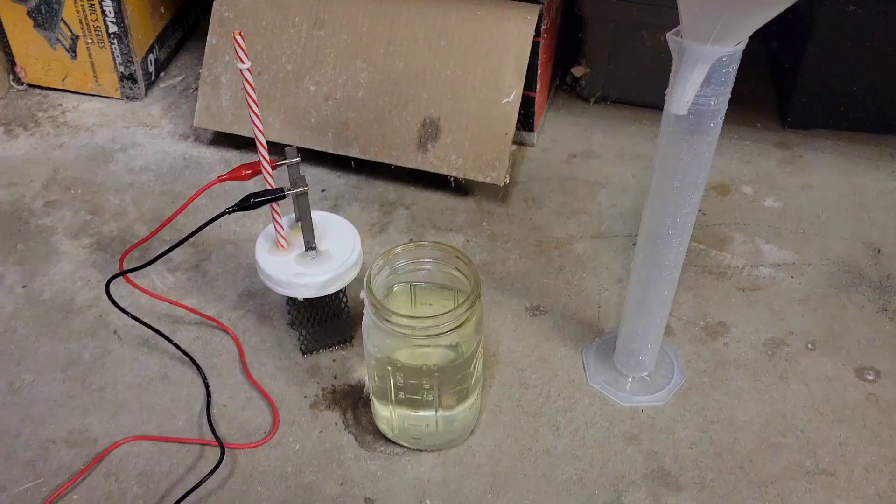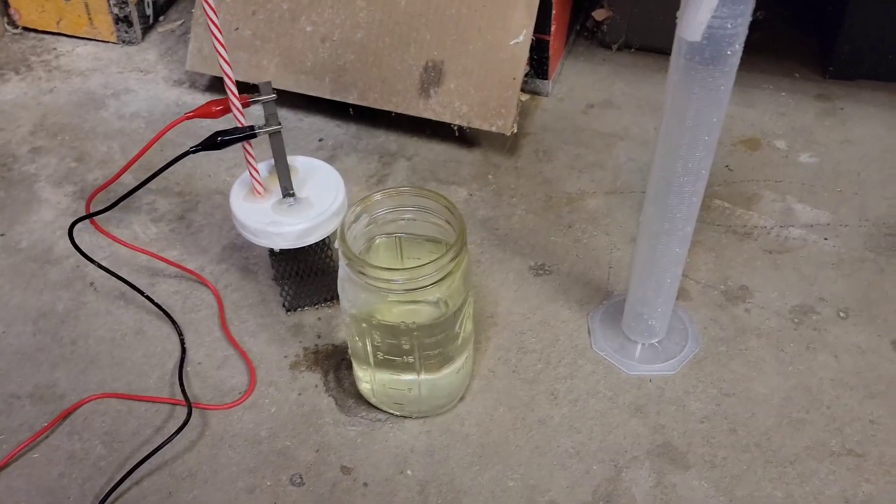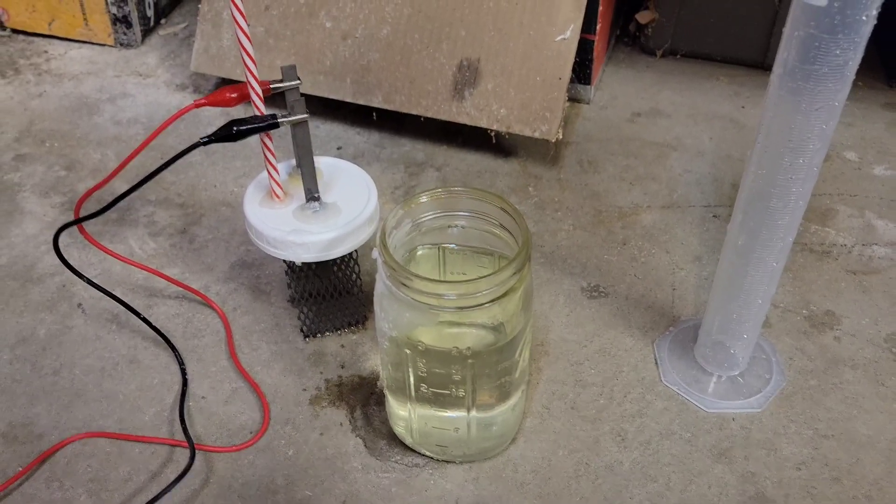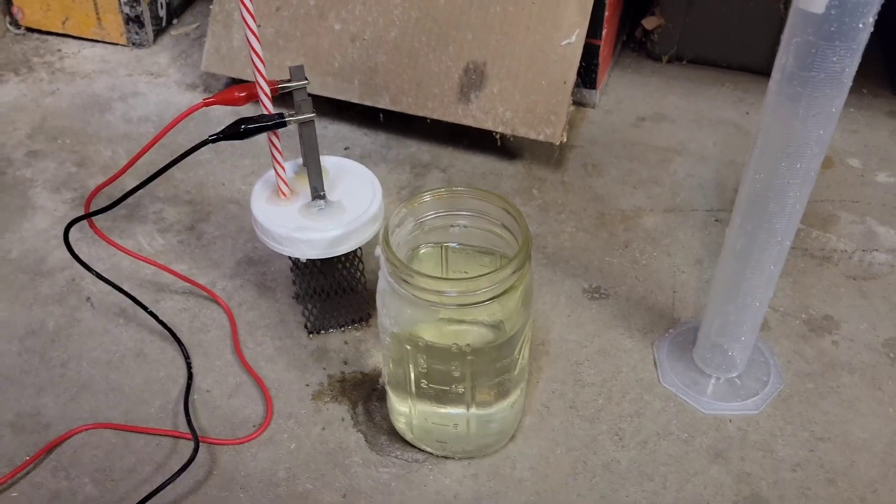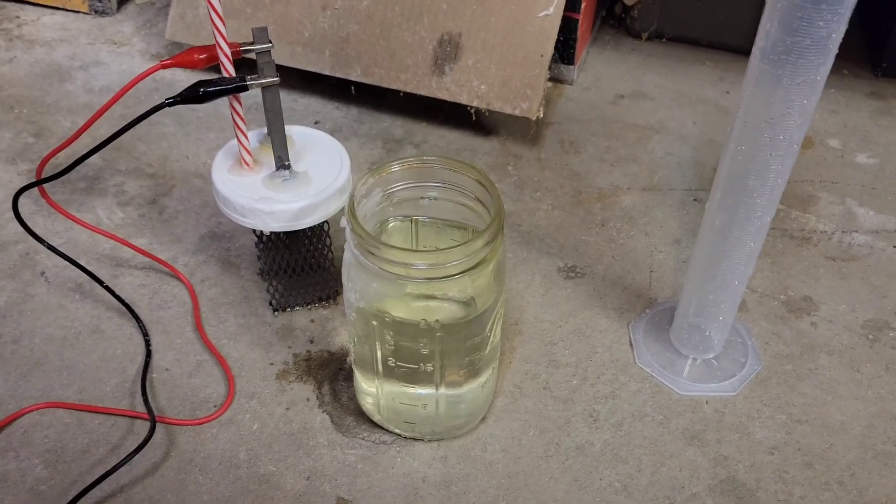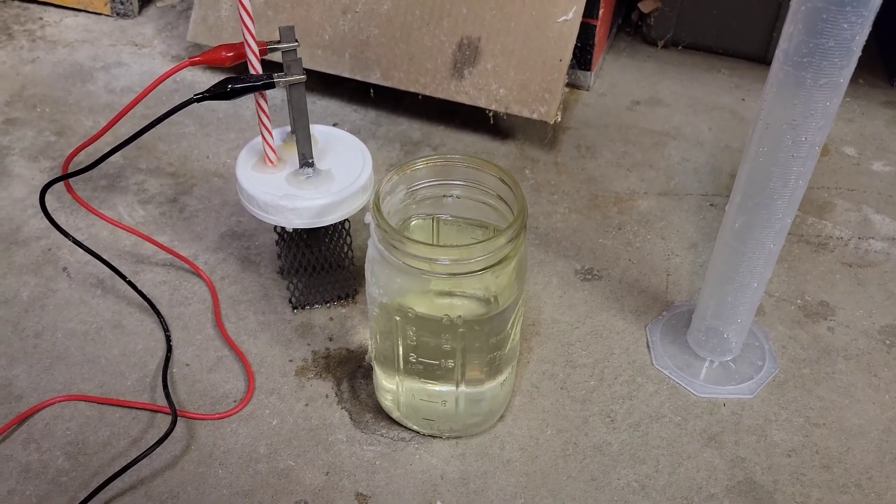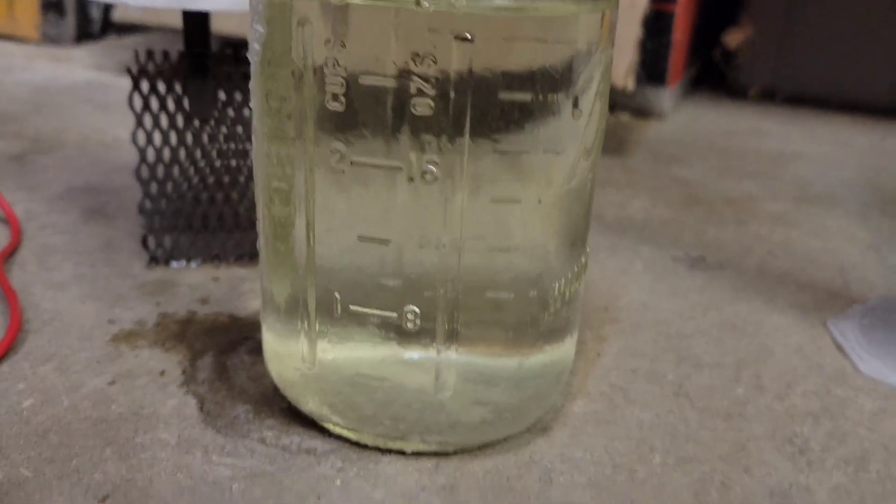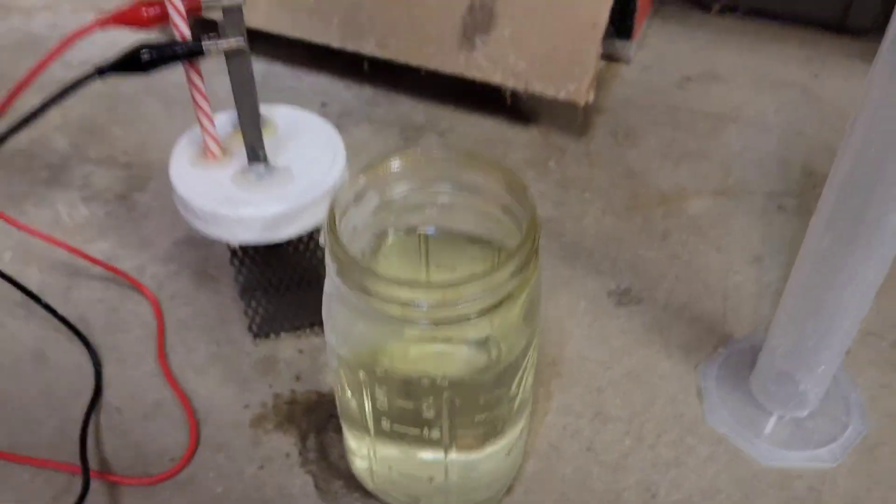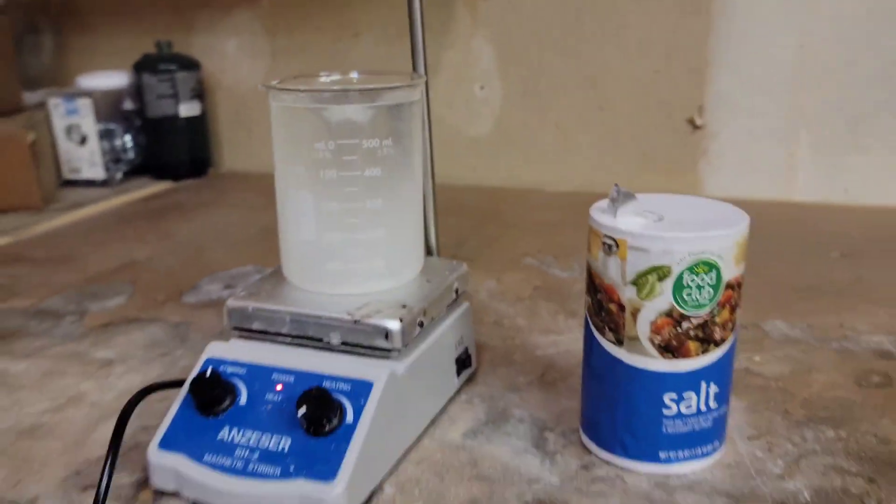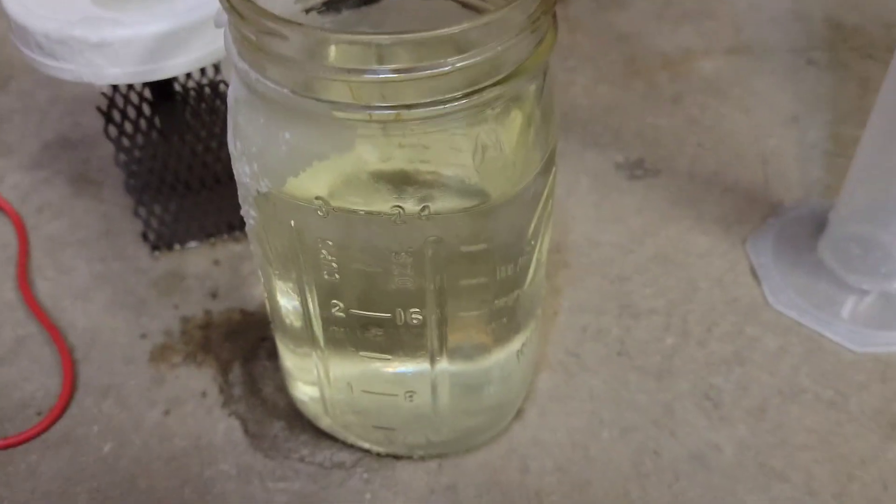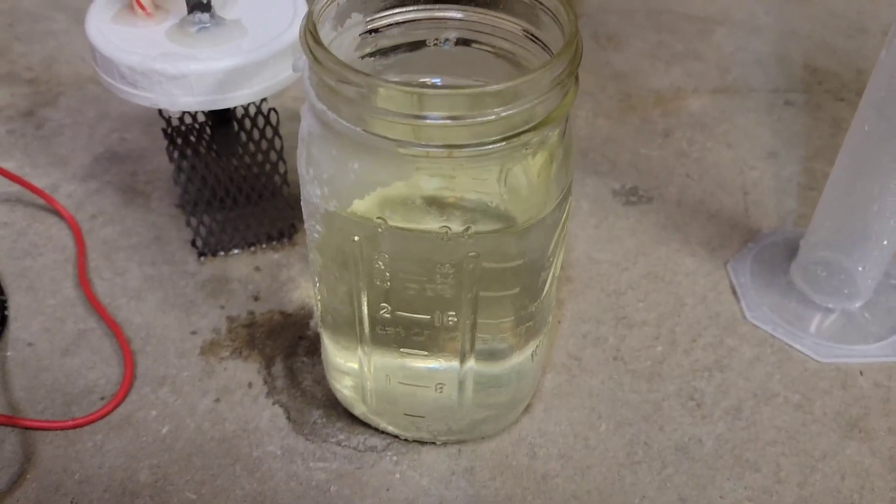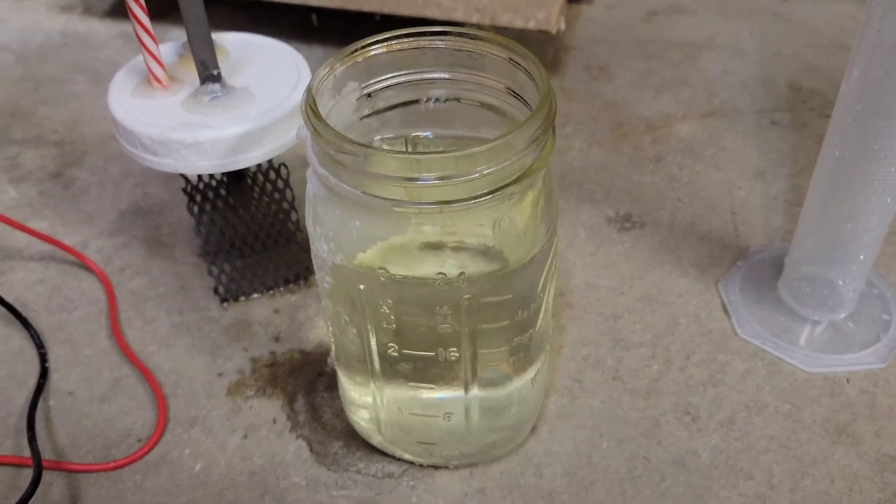A word of note that might be important to know is this solution after it's been run for a couple days actually contains a lot of hypochlorous acid, and that's also known as bleach. So you can kind of see the off yellow color to this. If that gets on your clothes it will absolutely bleach it, so be a little bit careful not to spill any of that on you.